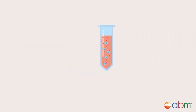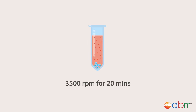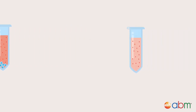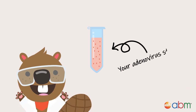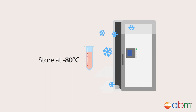Centrifuge the harvested and lysed cells at 3,500 rpm for 20 minutes in a benchtop centrifuge to pellet the cell debris. Transfer the supernatant to a new tube and add 50% glycerol to a final concentration of 5%. This is your adenovirus stock. Store your virus stock in a minus 80 degrees Celsius freezer.